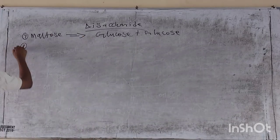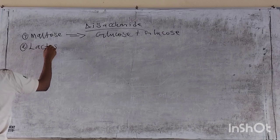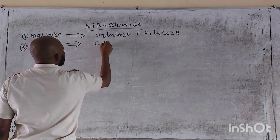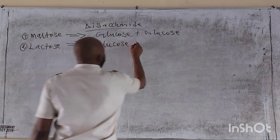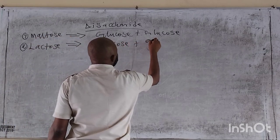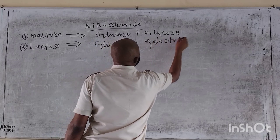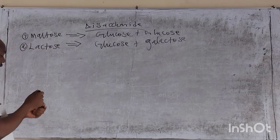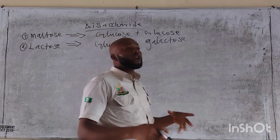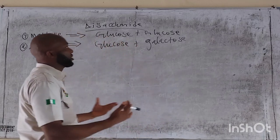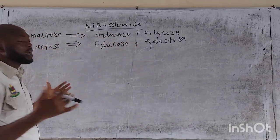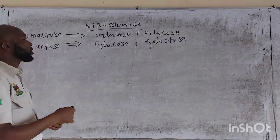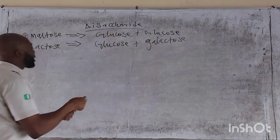Now we have lactose. Lactose has to do with glucose and galactose. So we have to first draw our structures of glucose and galactose — we have to form the ring structures, then we know how we are going to react them. We know the ring structure of glucose obviously, so let's take the open structure of galactose first.